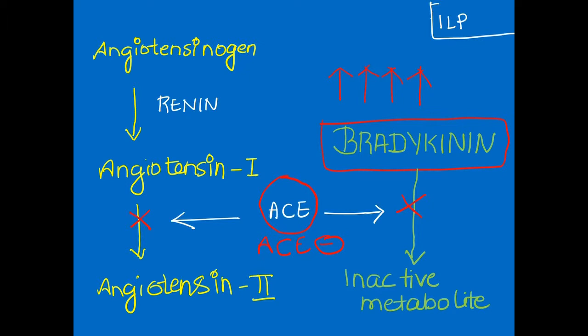To know why it causes cough, you should know the renin-angiotensin system. Angiotensinogen is a precursor for angiotensin 1. It is converted from angiotensinogen to angiotensin 1 with the help of renin, and from angiotensin 1 to angiotensin 2...